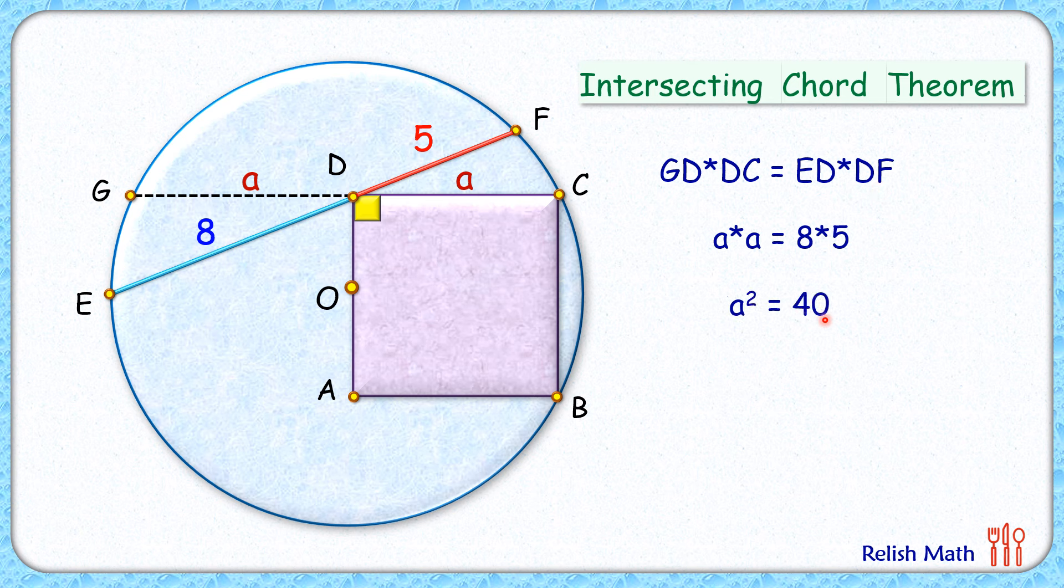So we are getting a squared equals 40. And a squared is nothing but the area of this square which we had to find. So area of the square is 40 centimeter squared and that's our answer.